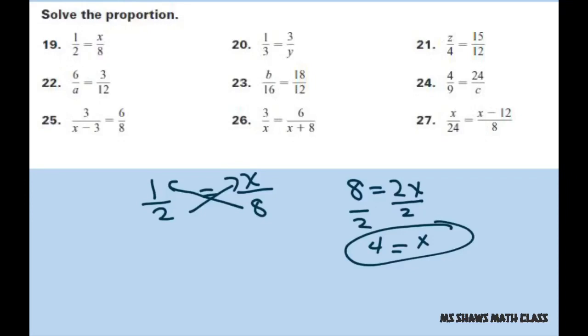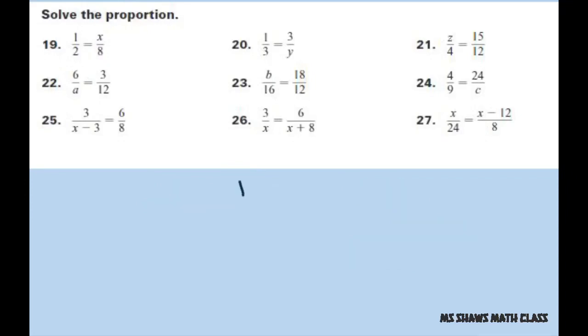Next one: 1/3 equals 3 divided by y. You don't have to cross this way, you can cross a different way, but that's how I do it. So y times 1 is just y equals 9. And if you plug it back in here you see that 1/3 is the reduction of 3/9, so it should even out.